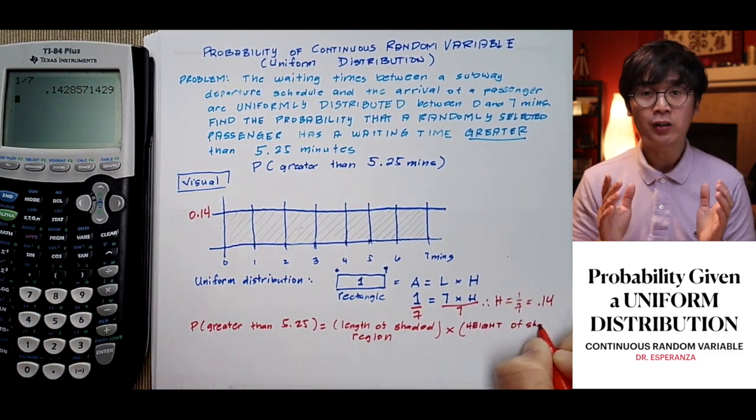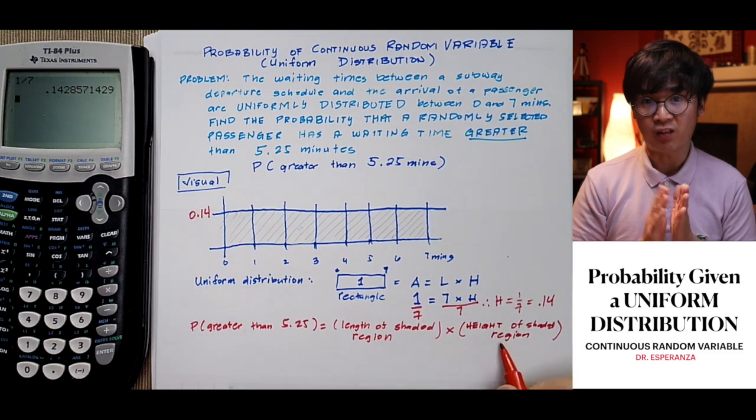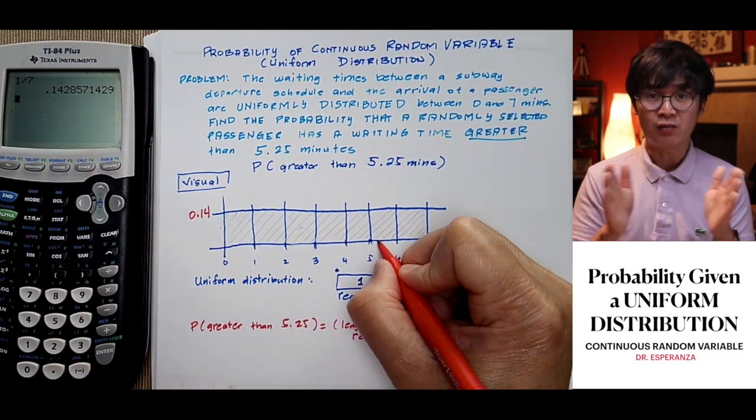which is given by length of shaded region multiplied by the height of the shaded region. The shaded region